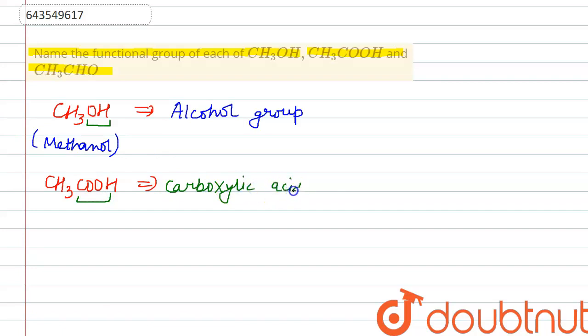Then third compound is CH3CHO, which contains CHO group, which is an aldehyde functional group. This compound is known as acetaldehyde.